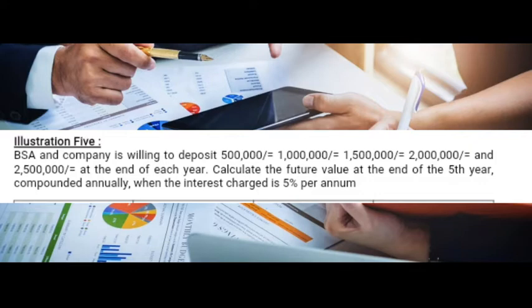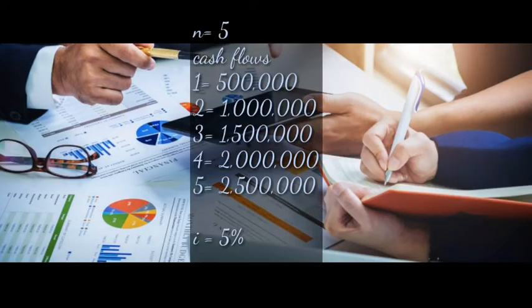From our question, n equals 5. The cash flows are: year one — 500,000; year two — 1 million; year three — 1.5 million; year four — 2 million; and year five — 2.5 million. Our interest rate is 5%.